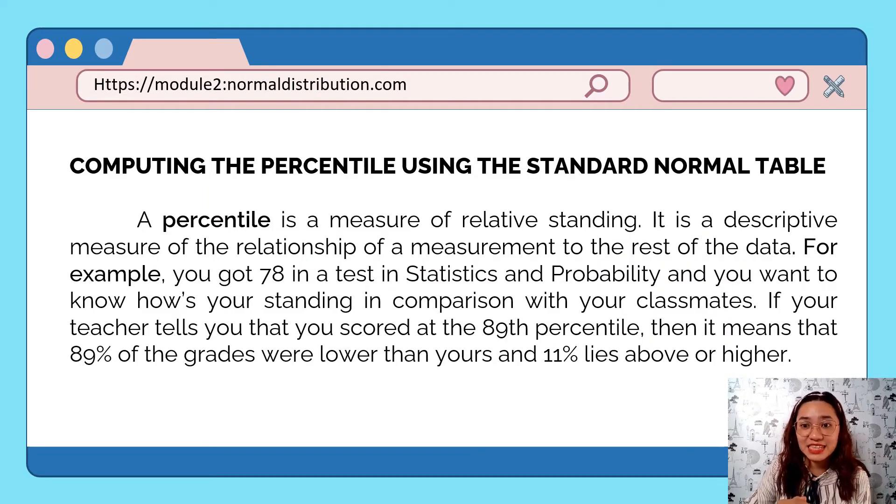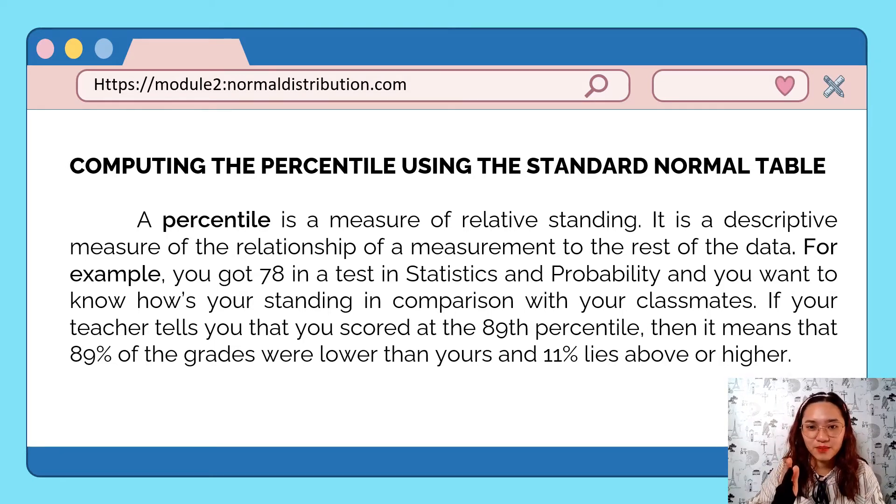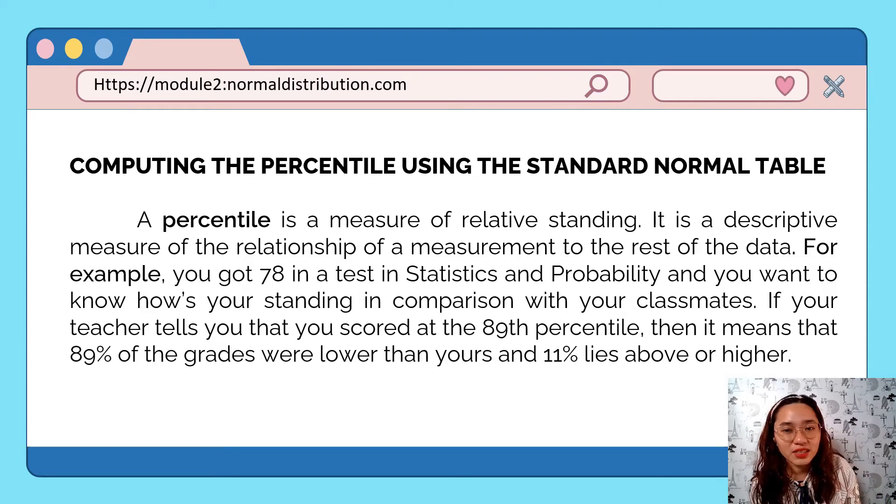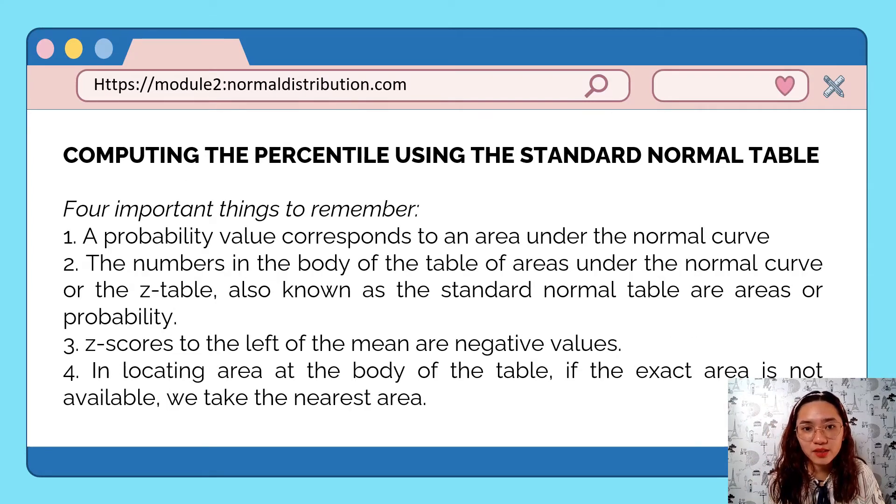Alright, percentile is a measure of relative standing. It is a descriptive measure of the relationship of a measurement to the rest of the data. For example, if you got a score of 78 in a test in statistics and you want to know how's your standing in comparison with your classmates. So if I tell you that your score is at the 89th percentile, that means that 89% of the grades of your classmates are lower than yours and 11% is higher than yours.